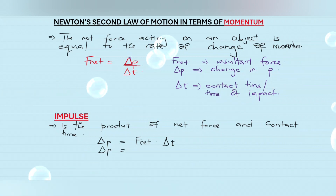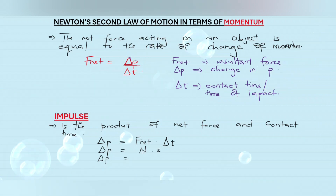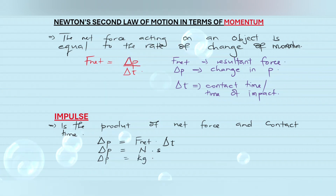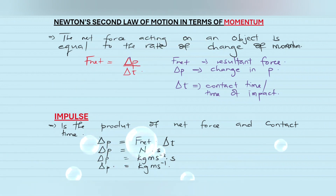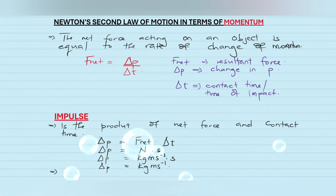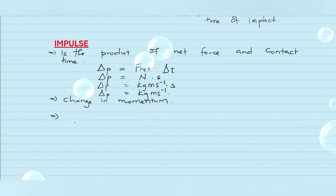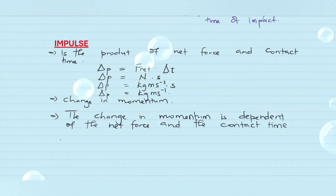The units of impulse are derived from this formula: the units for force are newtons and the units for time are seconds. Since force equals mass times acceleration, the units work out to kg·m·s⁻¹. The units for impulse are equal to the units for change in momentum, so we can also define impulse as the change in momentum. The change in momentum depends on the magnitude of the net force and the contact time. Impulse is a vector quantity and therefore must have direction.